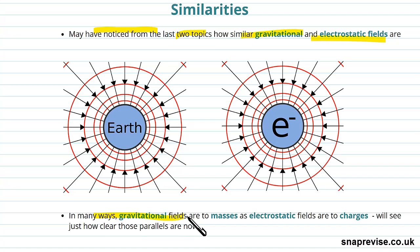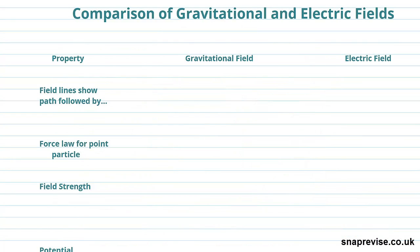So in many ways, gravitational fields are to masses as electrostatic fields are to charges, and we're going to see just how clear those parallels are by actually looking at a comparison table of the two. So let's do that now.